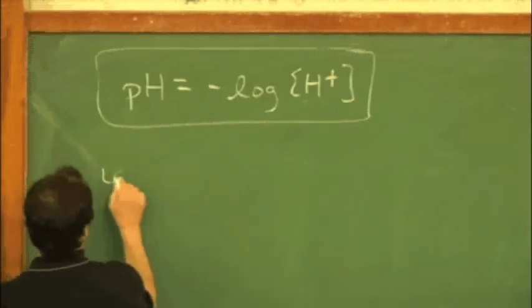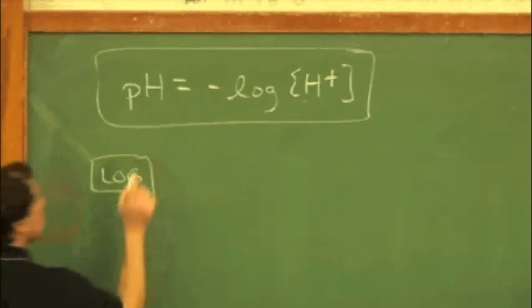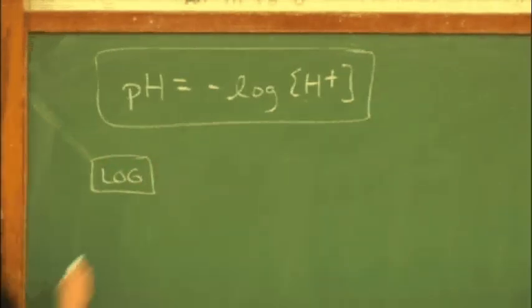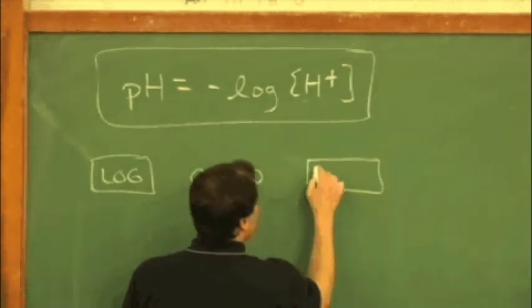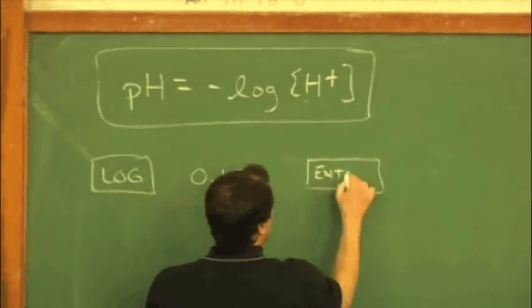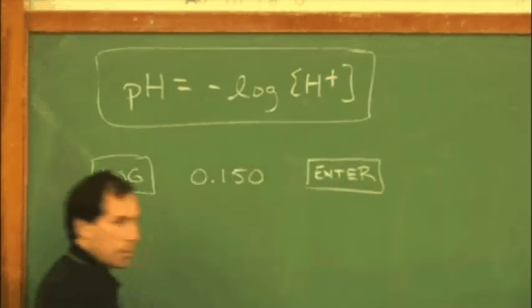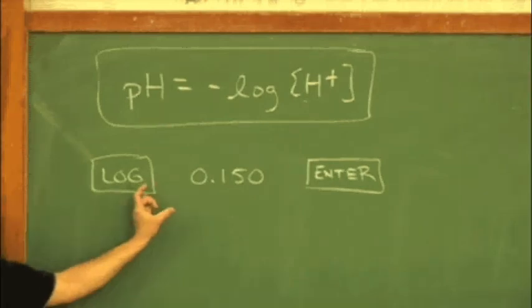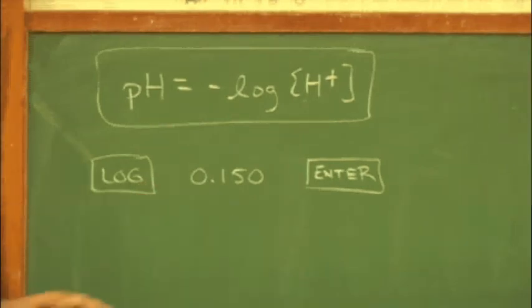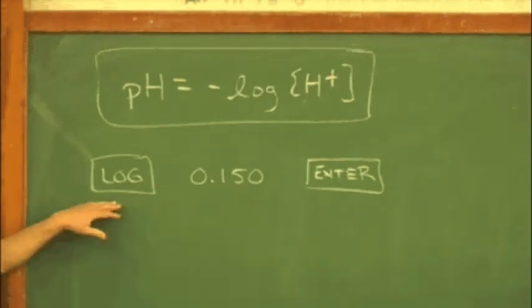So on your calculators, you'll probably hit the LOG button. And then you'll put in the number, 0.150. And oh, perhaps you have an equal sign or an enter button. If this gives you an error, these two are out of step and need to be reversed. You might have to put the number in first and then hit log on your calculator, depending on your model.